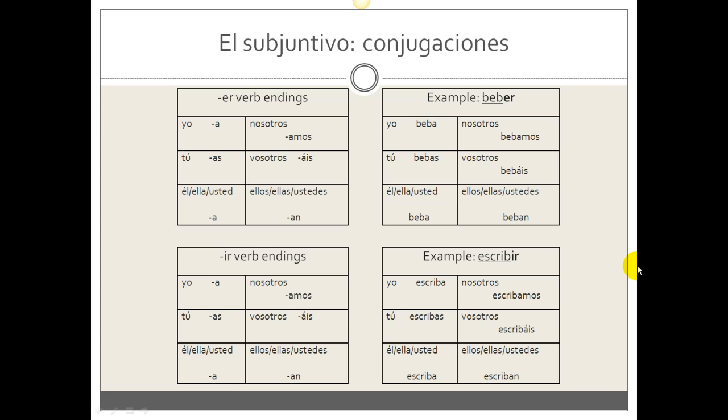So with beber: yo beba, tú bebas, él e usted beba, nosotros bebamos, vosotros bebáis, ellos e ustedes beban. Escribir: escriba, escribas, escriba, escribamos, escribáis, escriban. So those are the conjugations. Take the yo form, remove the O, and add E endings to AR verbs, and endings with A to ER and IR verbs.